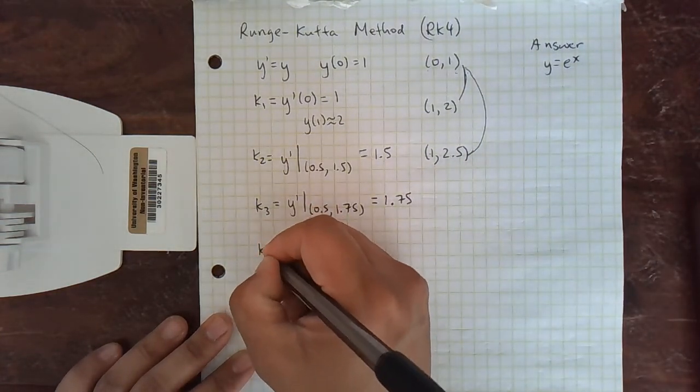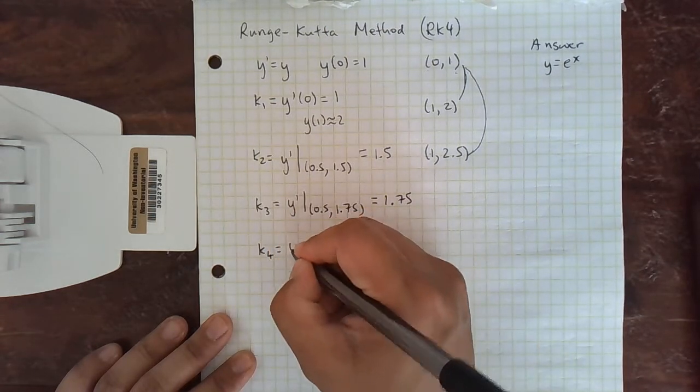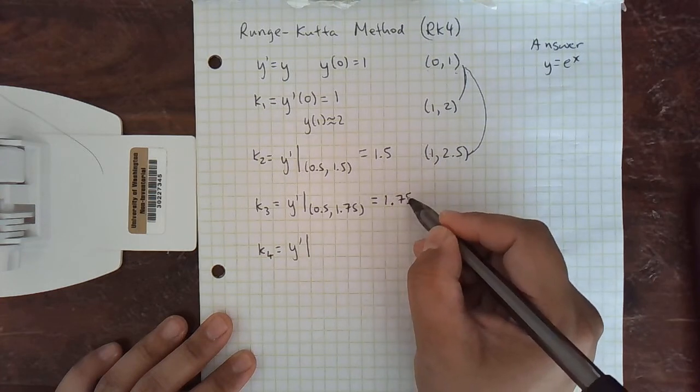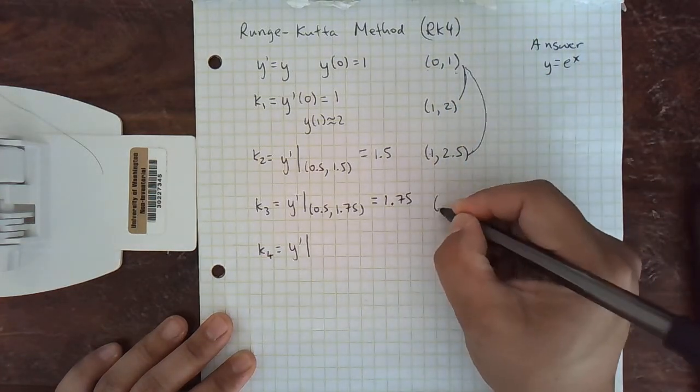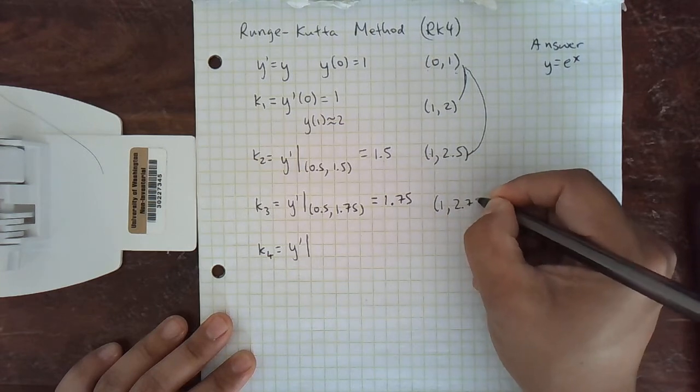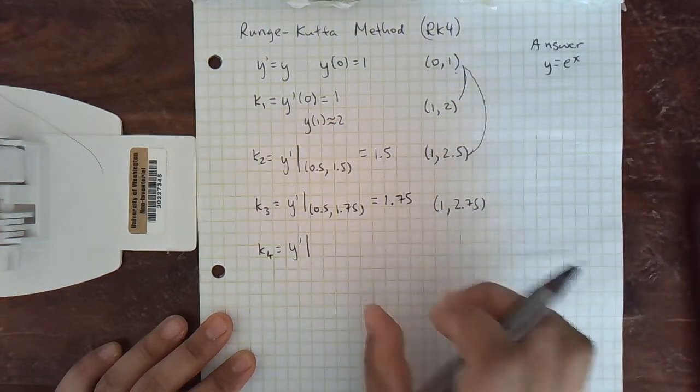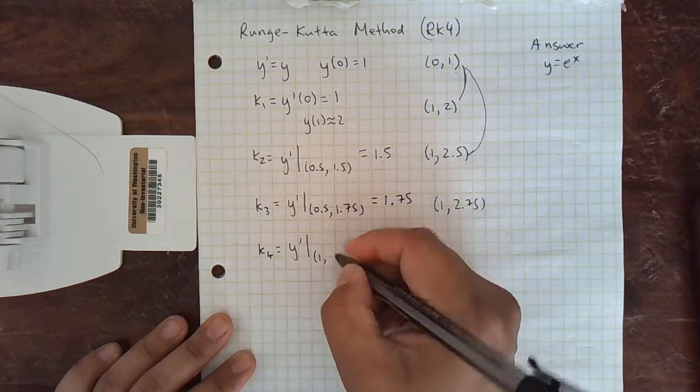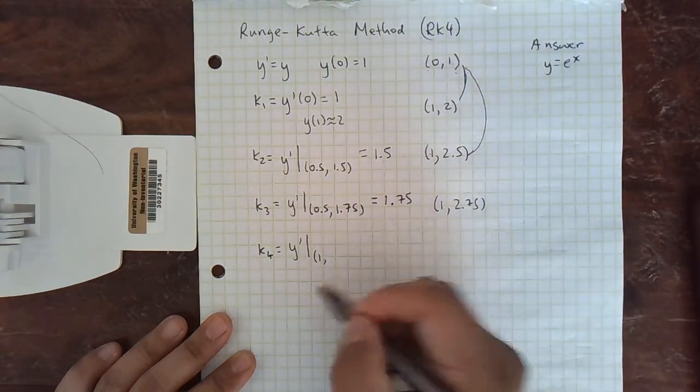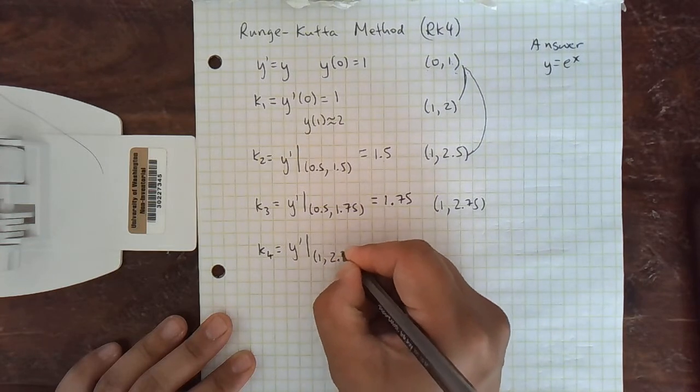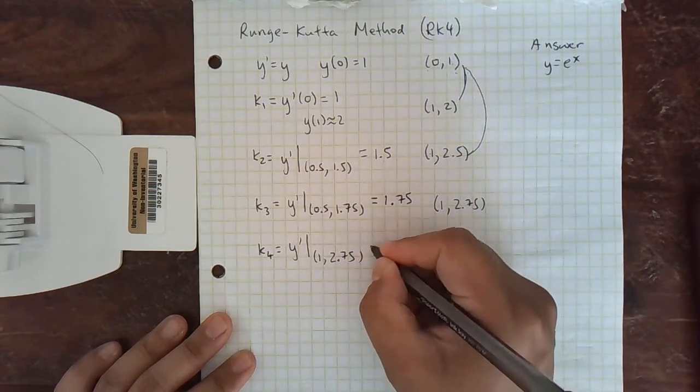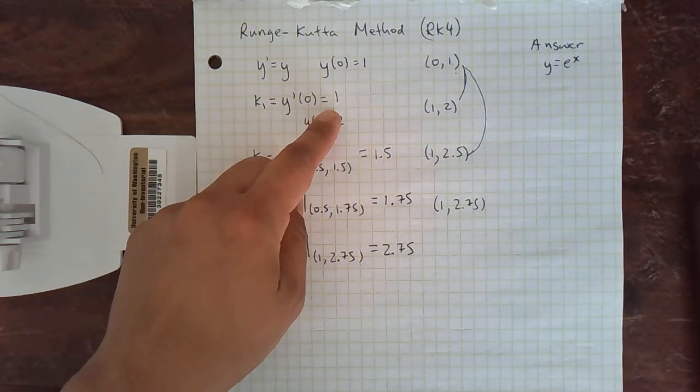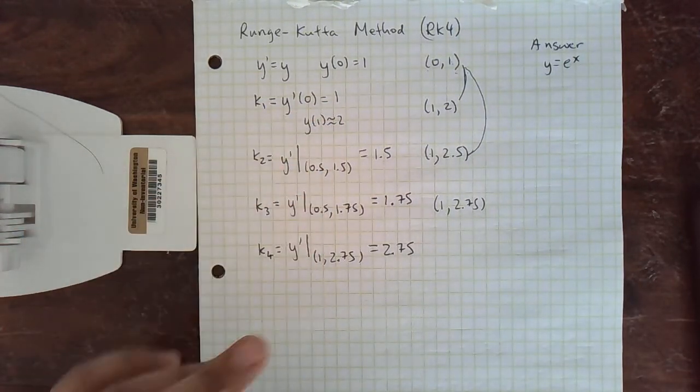And then we need one more slope, k4, y', and then we're just going to use our k3 and get to our final destination. So 1, 2.75, because we started at 1 and walked over 1 with a slope of 1.75. So this is just y' of just this point, no more midpoints. So we kind of have a point at the beginning, slope from the beginning of the interval, two midpoint-ish slopes, and one slope at the end of the interval.